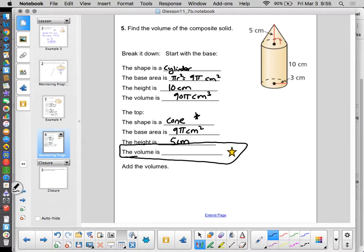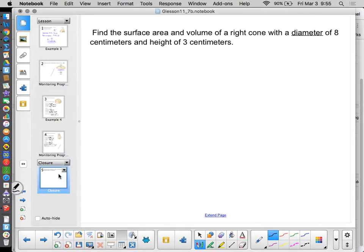Once you're done, add the volumes. Finally, a word problem, because we're going to see a few like this. It says, find the surface area and volume of a right cone with a diameter of 8 centimeters and a height of 3 centimeters. So you get a word problem, what do you want to do first? Draw a picture. We've been talking about that all year.